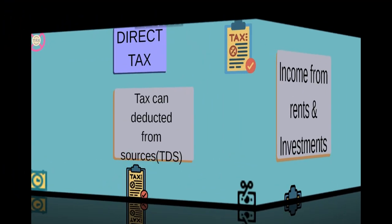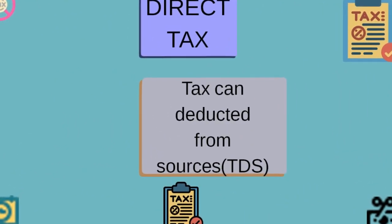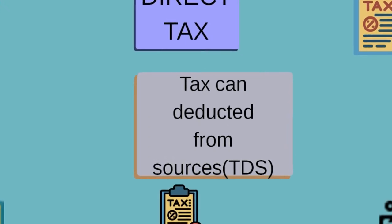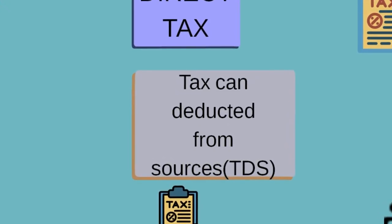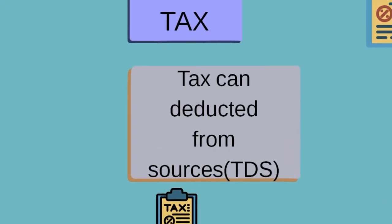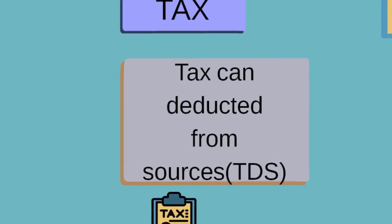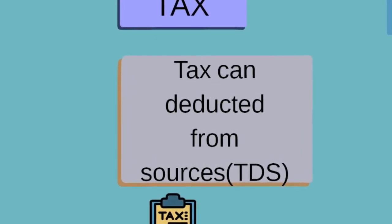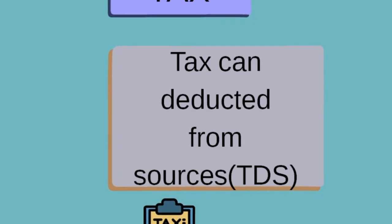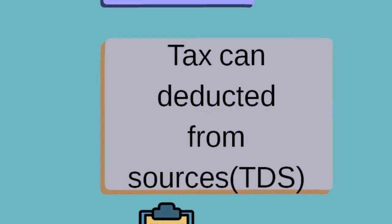The tax varies from one income slab to another and is changed periodically by the government. If you look at the various savings instruments, you will realize that some of these, like PPF, are tax-saving instruments, while others, like KVP, are fully taxable.